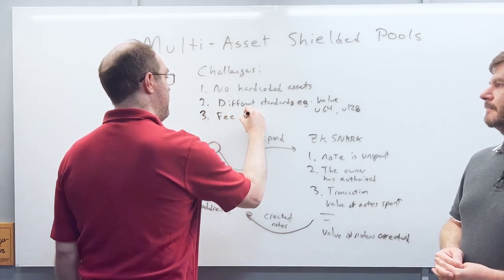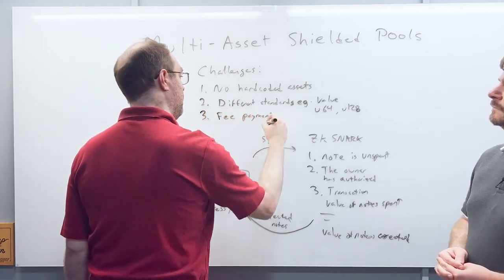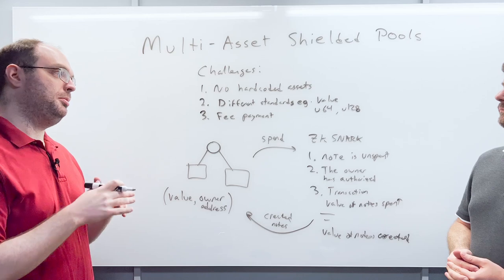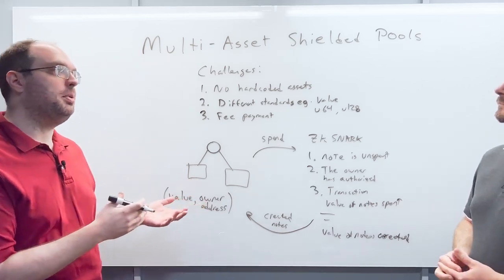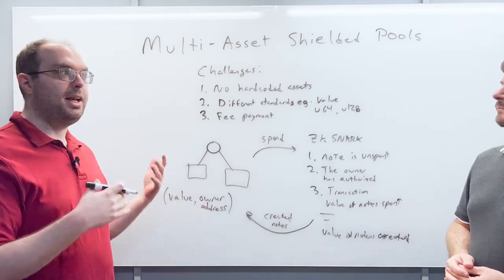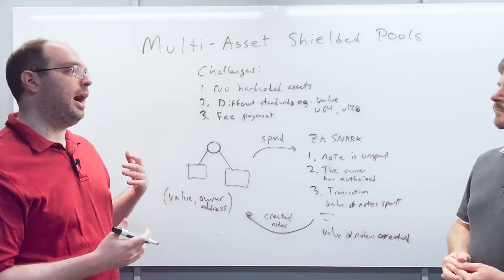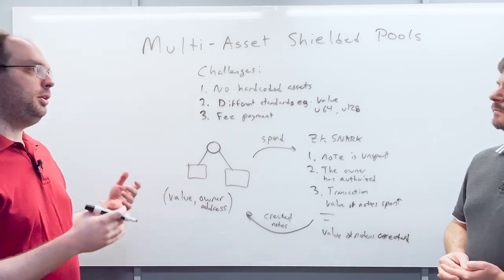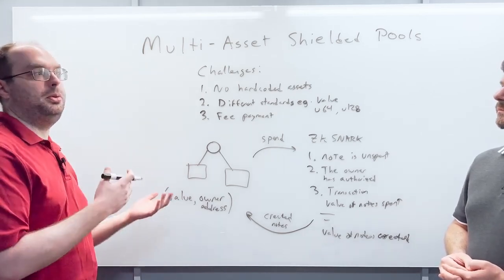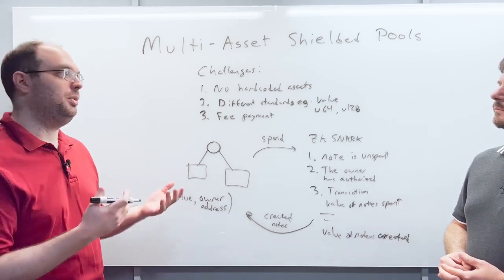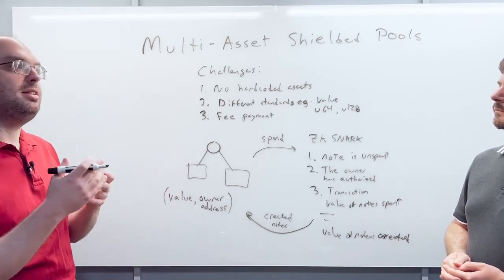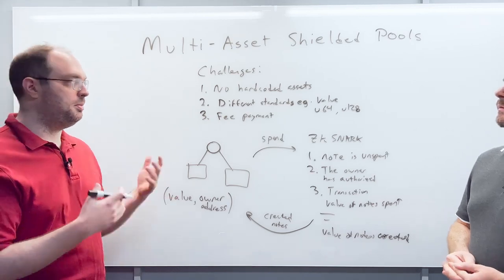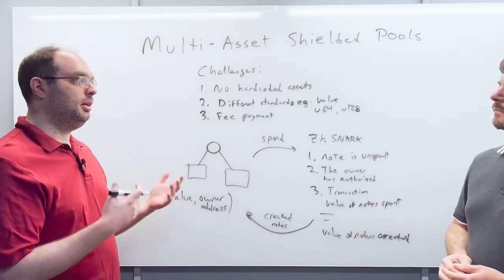Another challenge is fee payment. When you have multiple asset types in the same shielded pool and a transaction involves one asset type that isn't the native token of the chain, how do you negotiate the fee? You either need the native token, or you have some mechanism to unshield some of the other assets to pay the fees — but then you're revealing what asset was in the transaction, which leaks privacy.